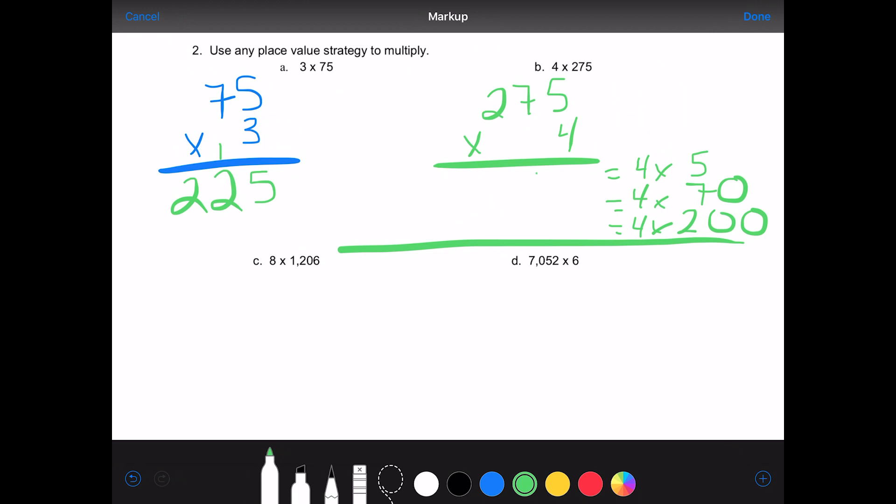So then we go 4 times 5 is 20. 4 times 70 is 280. 4 times 7 is 28, but if I put the 28 here, I'll get the wrong answer because it's not in the correct place value. It's 280 because there's a 0 in the 1's place. Then we have 4 times 200 would be 800, again making sure it's in the right column.